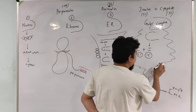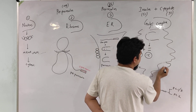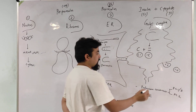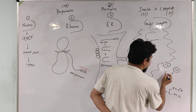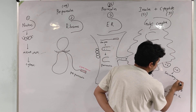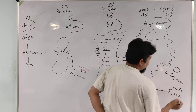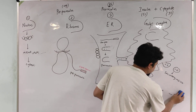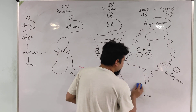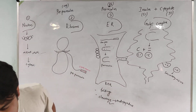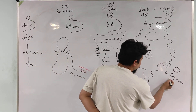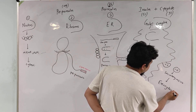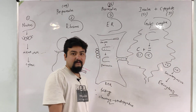These vesicles come out of the Golgi complex and are known as secretory vesicles. Finally, under the stimulation of some physiological factors, insulin and C-peptide can enter circulation by the process known as exocytosis.